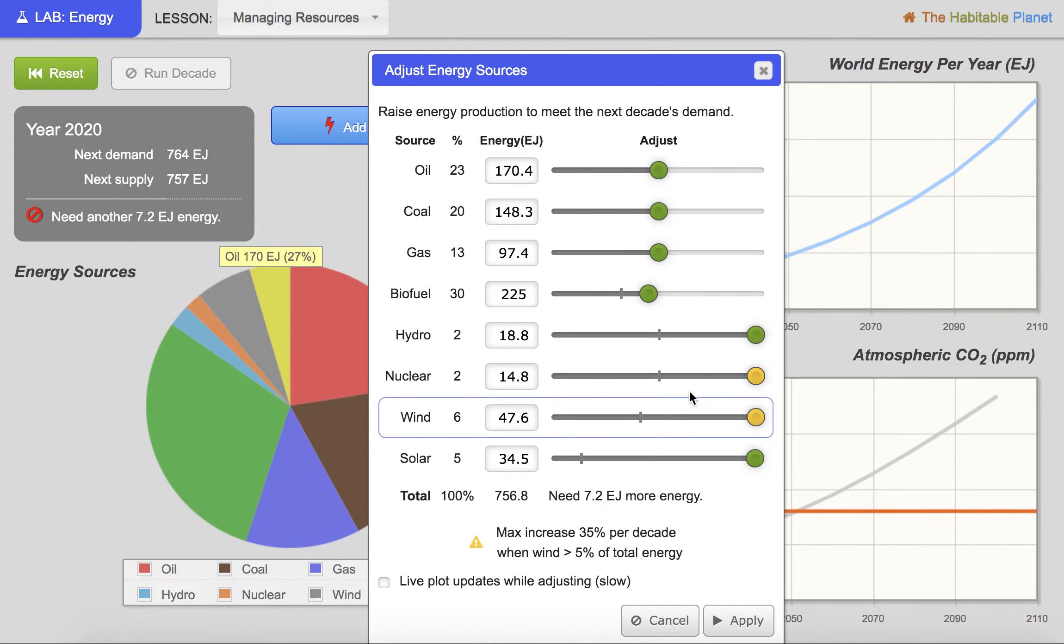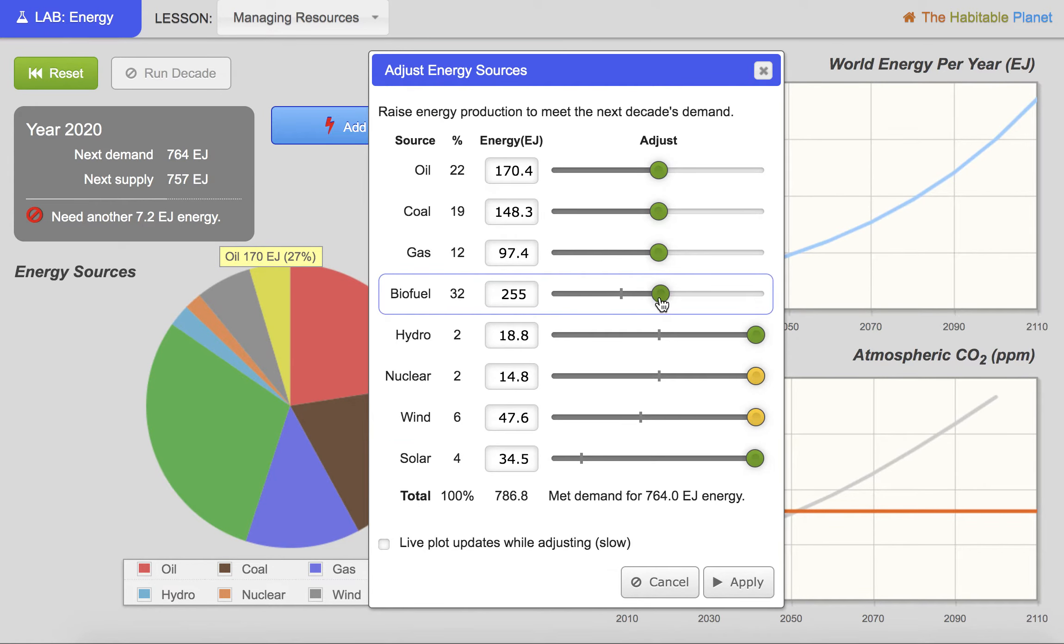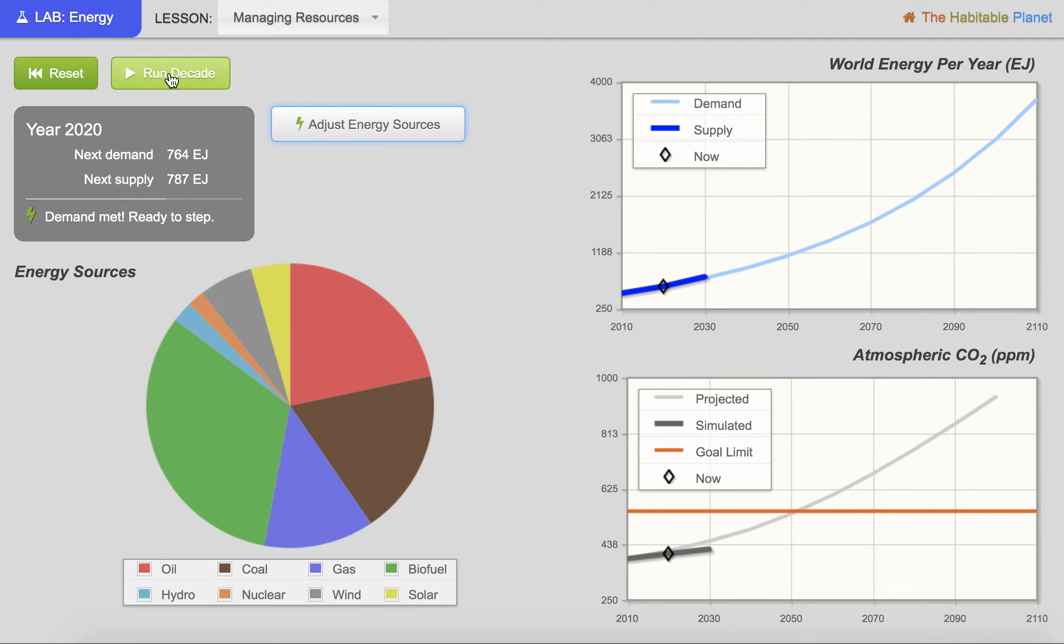Oh, I didn't meet my need. Now that I've met my need, I can run this decade. I'm going to click run. You can see I've moved here. I'm still meeting that energy need. And now I'm actually below the expected amount of CO2.